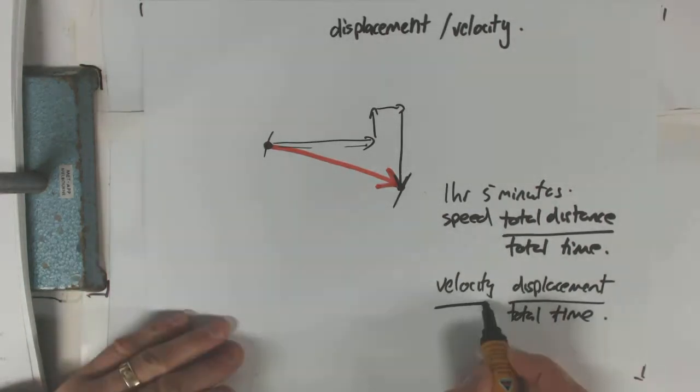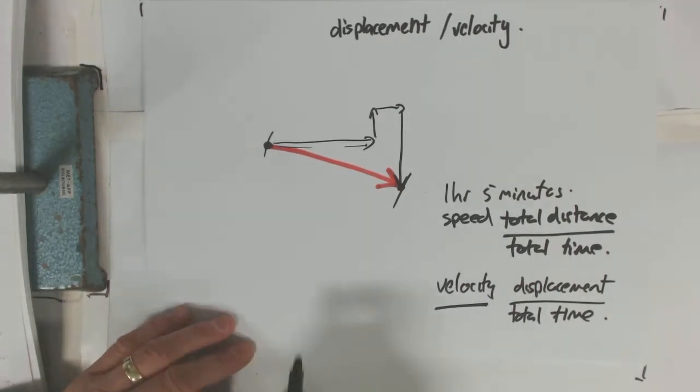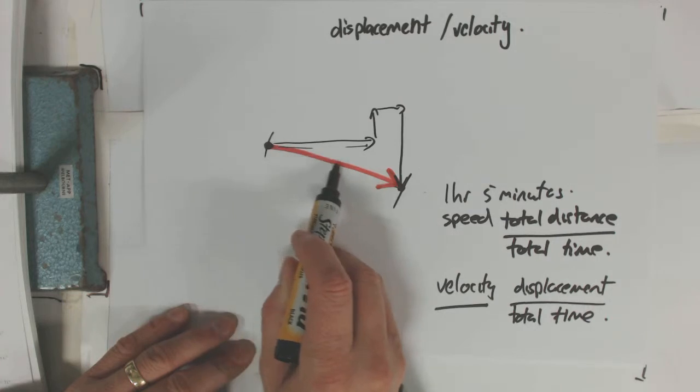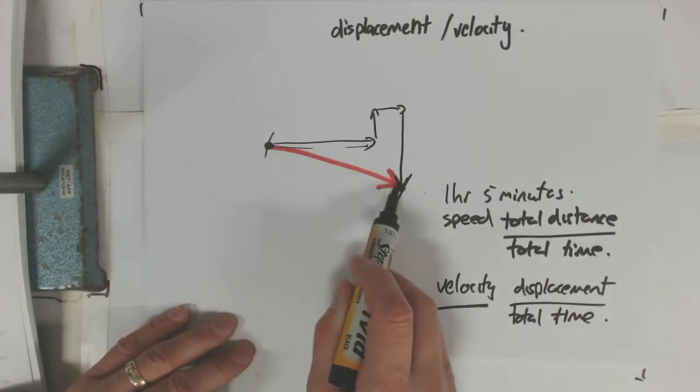And so your velocity would have what direction? Well, if it's this displacement and this direction - this displacement, which is this distance and this direction, divided by time.